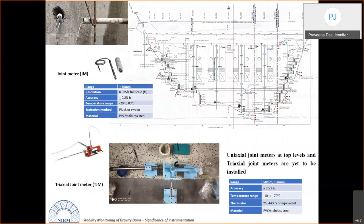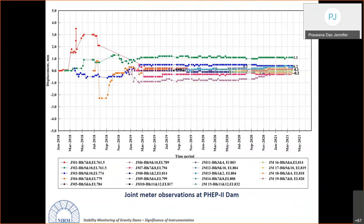Joint meters currently show small displacement values of 0.1–0.2 mm during construction, but these will become critical once impounding starts. Block movements in the transverse and vertical directions will help identify seepage locations and problem areas within the dam body. Six triaxial joint meters are being included at every alternate two blocks.